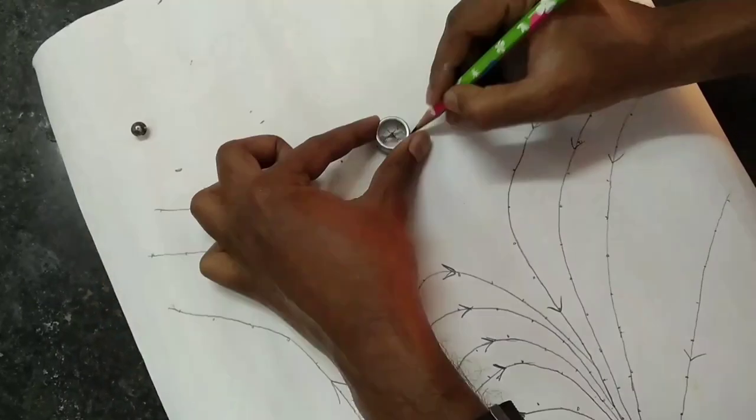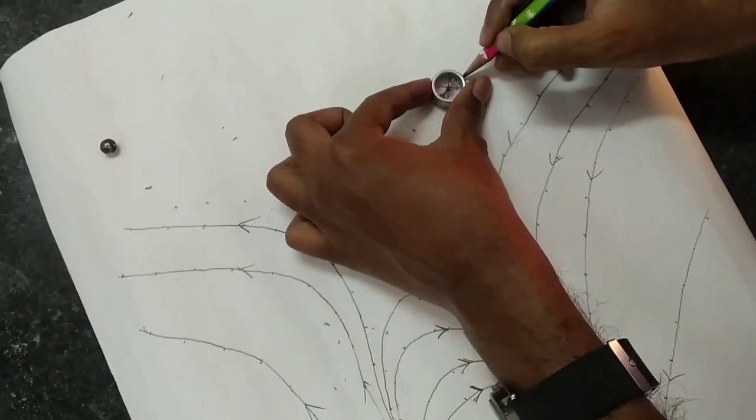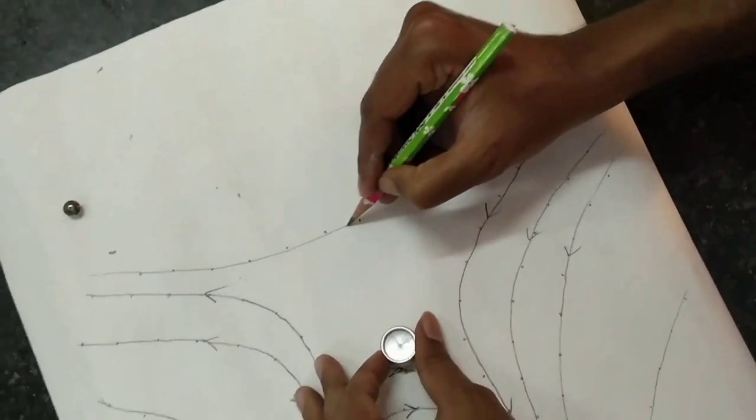Now like this on the top part you can draw the magnetic field lines due to earth's magnetism.